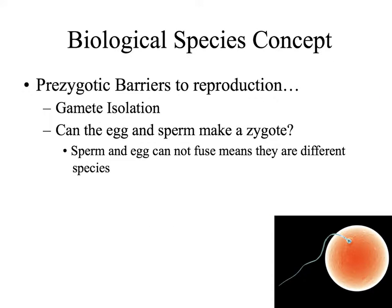Another type of prezygotic barrier is gametic isolation. In this one, we have to look at the egg and sperm cells — can they fuse in order to form the zygote? There are many different types of protein receptors and chemicals found on the cell membranes of both egg cells and sperm cells. If these receptors don't match, the sperm cell will be rejected and will not be able to fuse with the egg cell, which means reproduction will not occur.